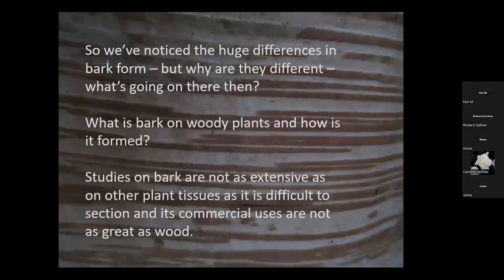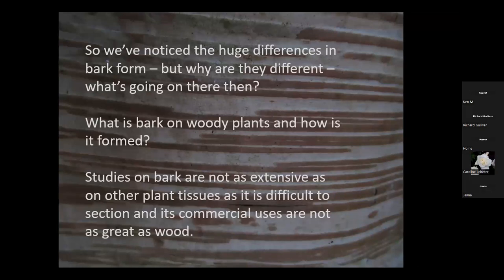We've looked at the huge differences in bark — but why are they different? What is bark on woody plants and how is it formed? Studies on bark aren't as extensive as on other plant tissues because it's very difficult to section them for microscopy, and there's very little commercial use for most bark — it's normally thrown away — so people don't study it as much as the wood.